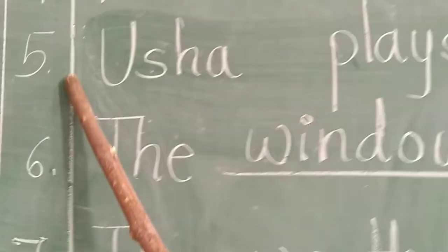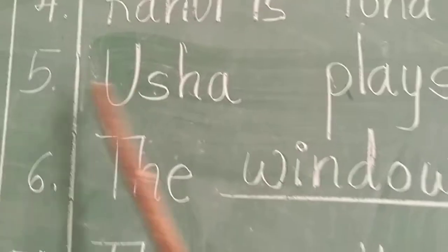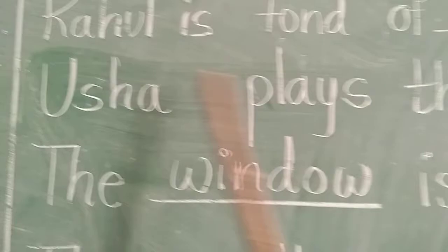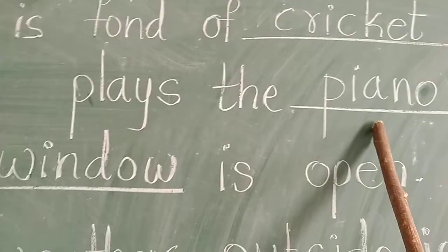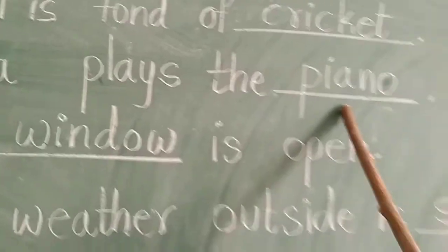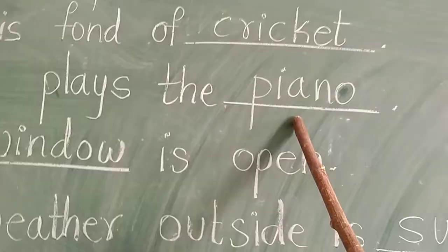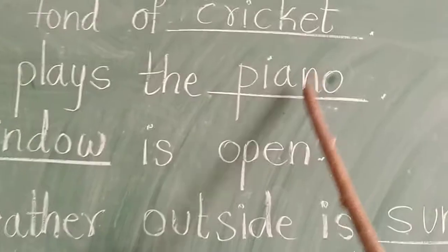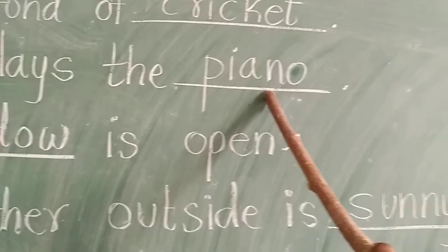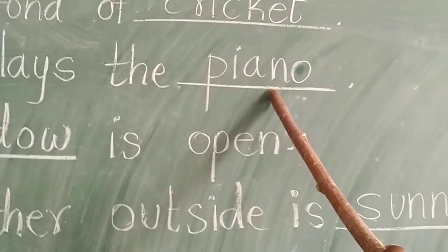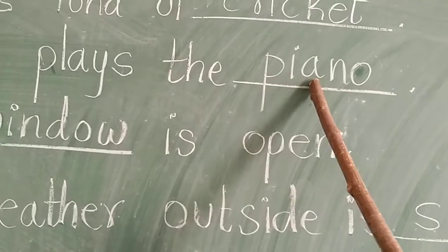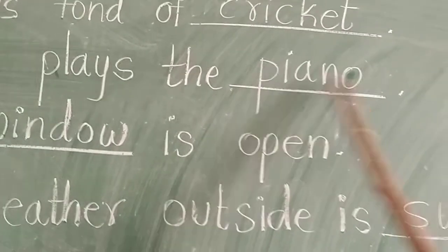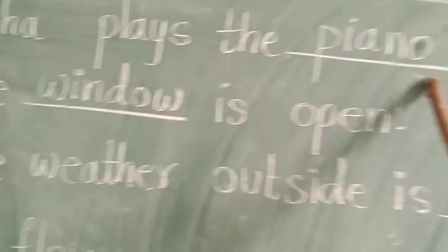Fifth question: Usha plays the dash. Usha plays the — piano. Spelling: P-I-A-N-O, Piano.